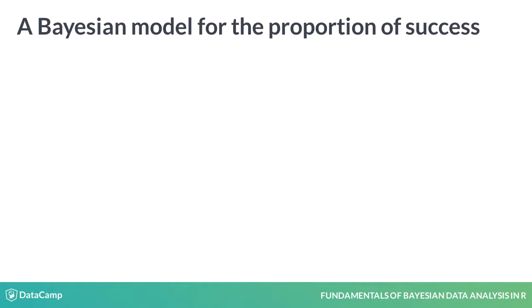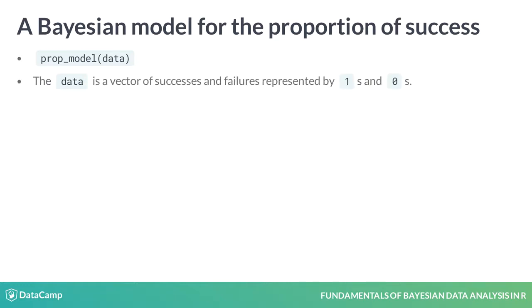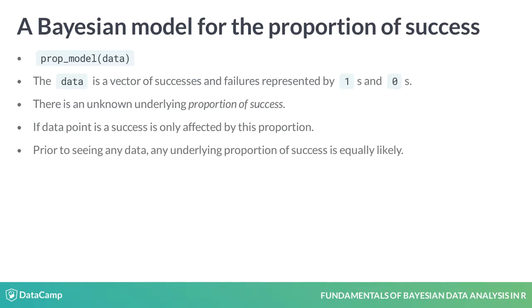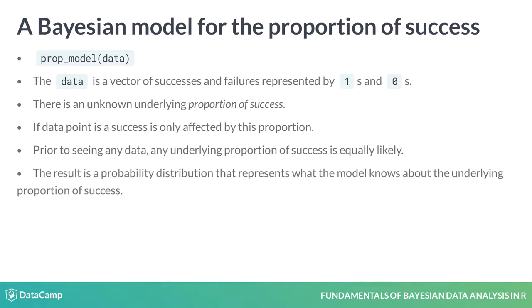I've implemented a Bayesian model in R that estimates this and I've given it the name prop_model. Prop_model takes data as its first argument and assumes that the data is a vector of successes and failures represented by ones and zeros, that there is an unknown underlying proportion of success, and whether a data point is a success or not is only affected by this proportion. And prior to seeing any data, any underlying proportion of success is equally likely. The result of prop_model is a probability distribution that represents what the model knows about the underlying proportion of success after having observed the data.